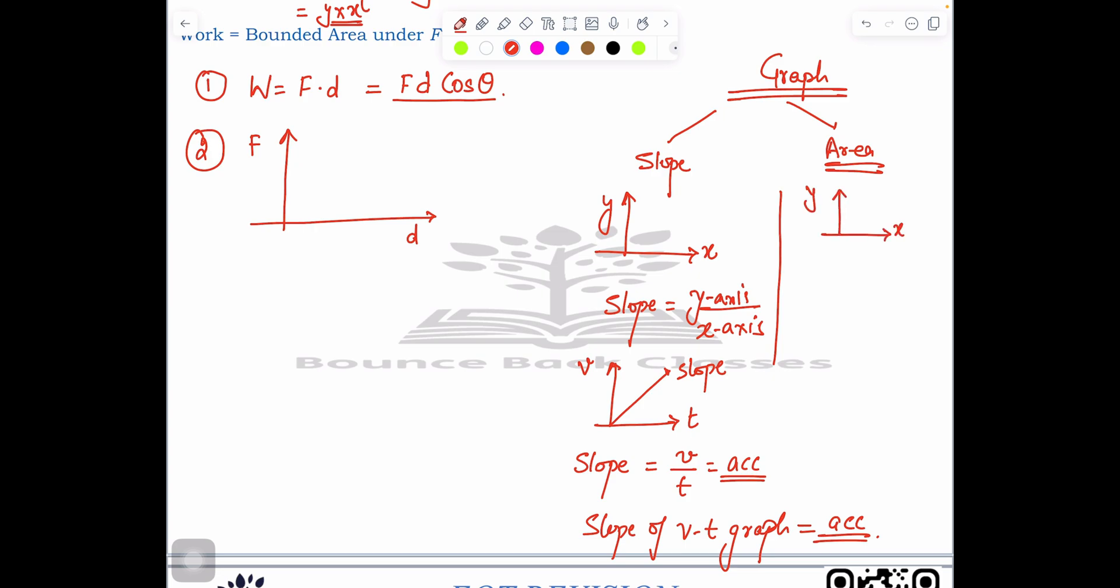Now in terms of area, whatever we have, let's say y-axis and x-axis, area equals y multiply x. As per this question we have force and distance, so work done equals force multiply distance. This is our area.